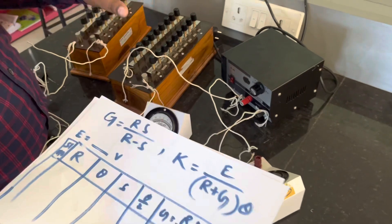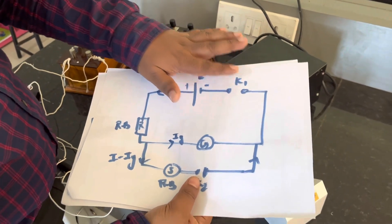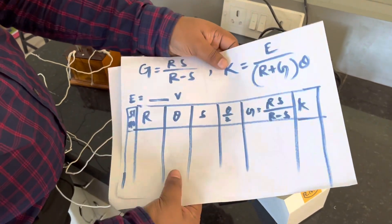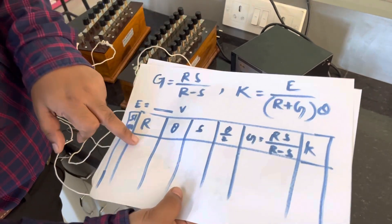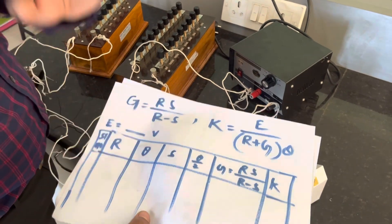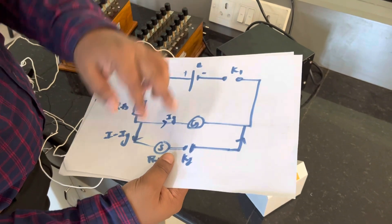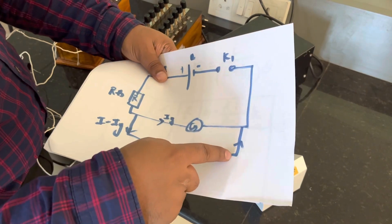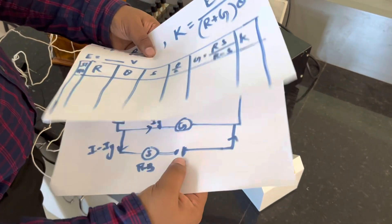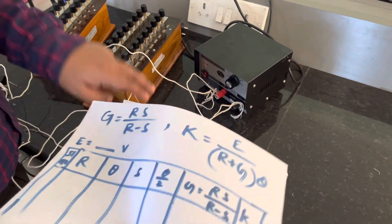First, we will keep K2 open and press K1 only, then note down the deflection as theta. Whatever resistance we use in R and the angle we get, we write as R and θ. Then in the second step, we press K2 so current flows through the shunt as well. We adjust S so that the deflection becomes half of the original theta, that is θ/2.